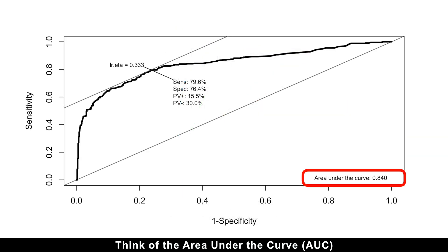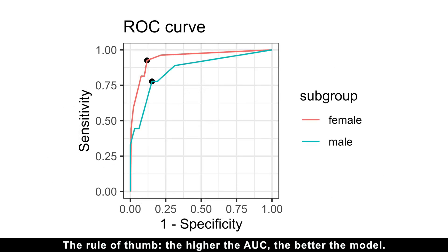Think of the area under the curve as your model's overall grade. The rule of thumb: the higher the AUC, the better the model. The AUC makes it super easy to compare different models or diagnostic tests.